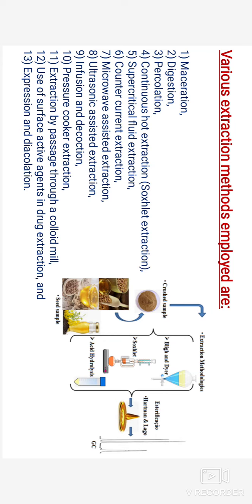In the learning objectives of this chapter, after completing this chapter, students should be able to understand the basic extraction methods of phytoconstituents and some modern extraction technology. Then the application of latest techniques like spectroscopy, chromatography, and electrophoresis in the isolation, purification, and identification of crude drugs. Also, various conventional and modern extractors for extraction, identification, and quantification of medicinal and aromatic plants.